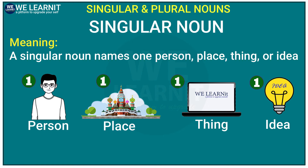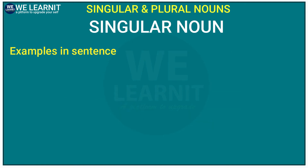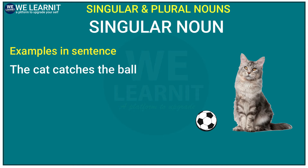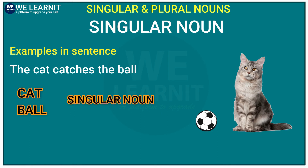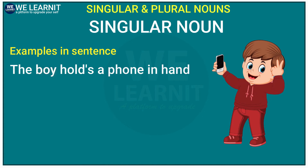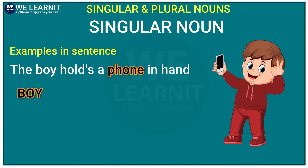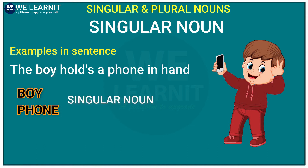So, let's look at some examples in sentences. 'The cat catches the ball.' In this sentence, 'cat' and 'ball' are singular nouns. Let's look at one more example: 'The boy holds a phone.' In this sentence, 'boy' and 'phone' are singular nouns.